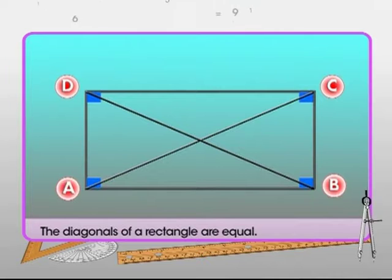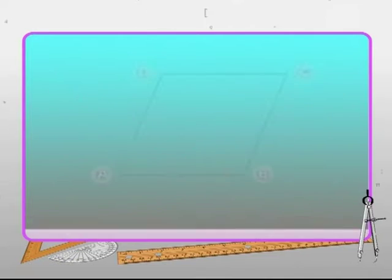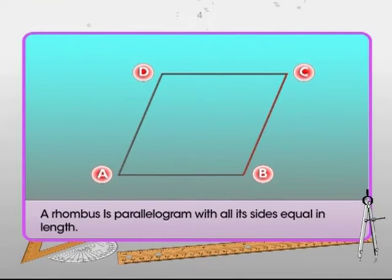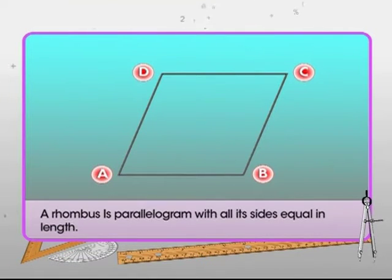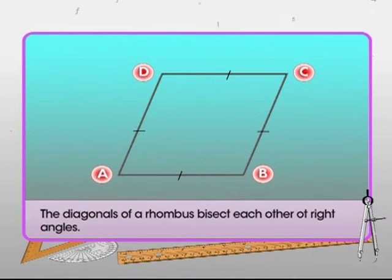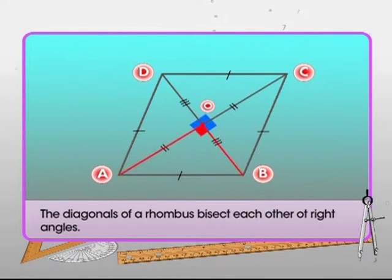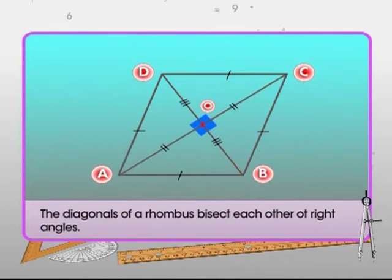In the figure, diagonal AC is equal to diagonal BD. A rhombus is a parallelogram with all its sides equal in length. In the figure, the sides AB, BC, CD, and AD of rhombus ABCD are all equal in length. The diagonals of a rhombus bisect each other at right angles — angles AOB, COD, BOC, and AOD are each equal to 90 degrees.